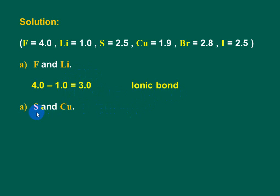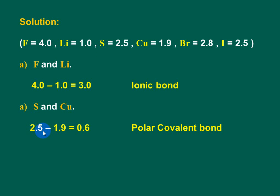Second, Sulfur and Copper. The electronegativity of Sulfur is 2.5 and that of Copper is 1.9. The difference is 2.5 minus 1.9 equals 0.6. Since 0.6 lies between 0.3 and 1.7, it's a polar covalent bond.